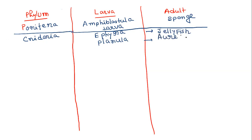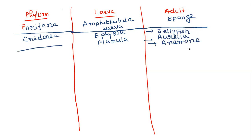Adult forms from cnidarian larvae include Aurelia, sea anemones, and related cnidarian animals.